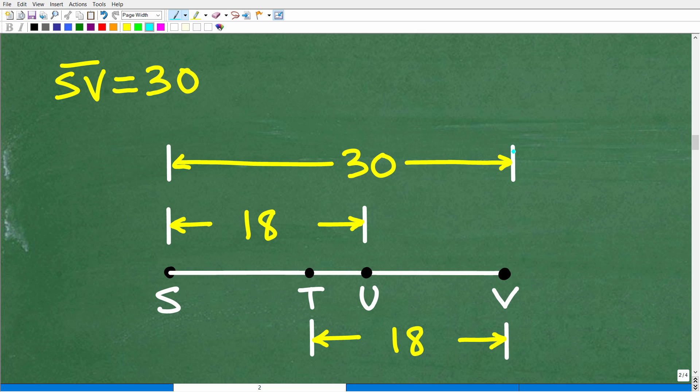Now, so from S to V, that's 30 units. We know that S, we're going to think of that as zero. We know point U here, we can think of it as 18. What do you think point V is, right? Well, hint, hint, you might be thinking, oh, I know what it is, Mr. YouTube Math Man. Well, that's great. So if you know what point V is, well, what is point T?